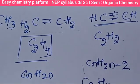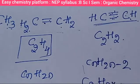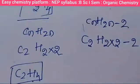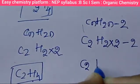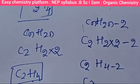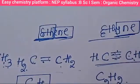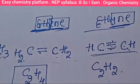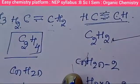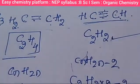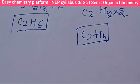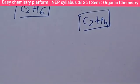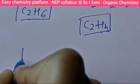Now for ethyne — two carbon atoms with a triple bond. Each carbon has three bonds in the triple bond, leaving one bond for hydrogen on each side. So 1 plus 1 gives 2 hydrogens. The formula is C2H2. Checking with CnH2n−2: 2×2−2 = 2. Correct.